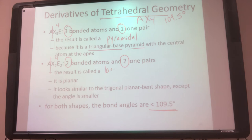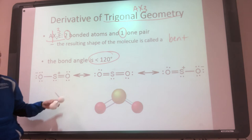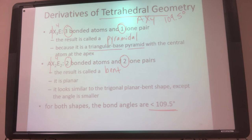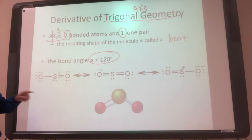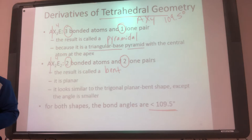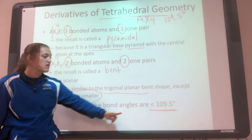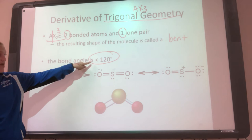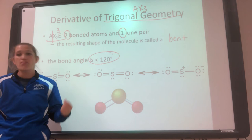Sometimes you might see this called 'tetrahedral bent' to distinguish it from the first bent shape from trigonal geometry, because both are bent. We have two bents, but the difference is the lone pairs. This bent has two lone pairs and two bonds. The other bent has two bonds and only one lone pair. The big difference is the angle: since this parent group is 109.5°, the bond angle is less than 109.5°, whereas trigonal planar's bent is less than 120°.